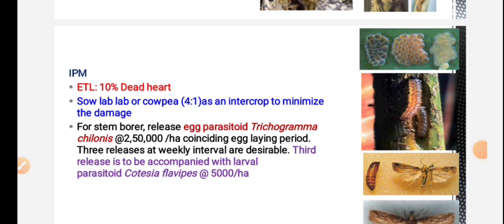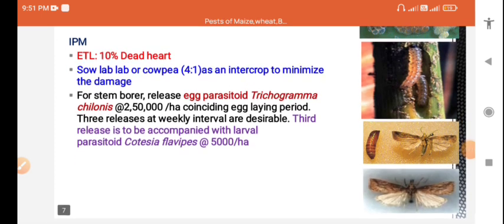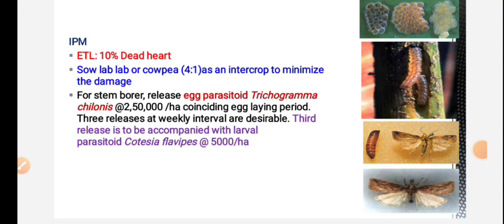The larval parasitoid is Cotesia flavipes, which is mixed and released. The egg parasitoid provides the best resistance in larval stages, so we can control that effectively.